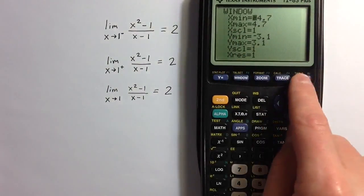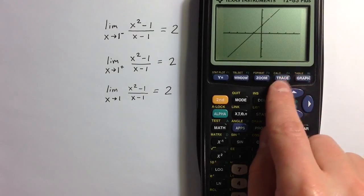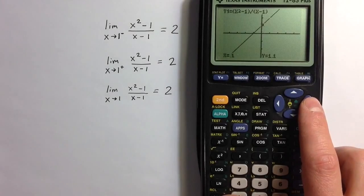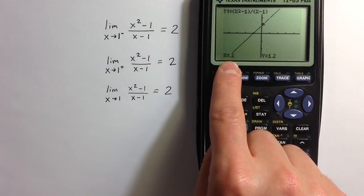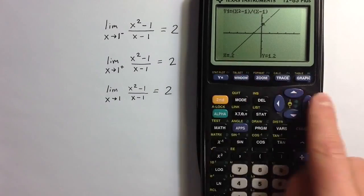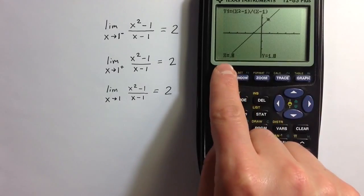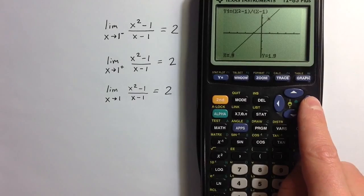And what's kind of cool about the decimal zoom is that if I hit the trace key, now using the arrows to go across, the x values, they just count up by 1 tenth each time. And so I can see that as we move closer and closer to 1 for x, the y values are getting closer and closer to 2.